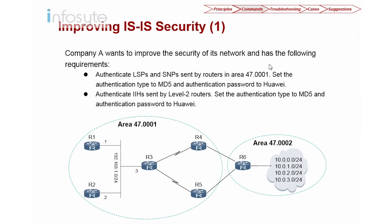Let's look into ISIS security. Company A wants to improve network security with the following requirements: authenticate the LSP and SNP sent by routers in area 47001, which runs at level 1 - so we will use area authentication with type MD5 and password 'Huawei'. The second requirement is to authenticate the IIH sent by L2 neighbors, which is between R4 and R6, and R5 and R6. We'll set authentication type to MD5 with password 'Huawei' using interface authentication command 'isis authentication'.